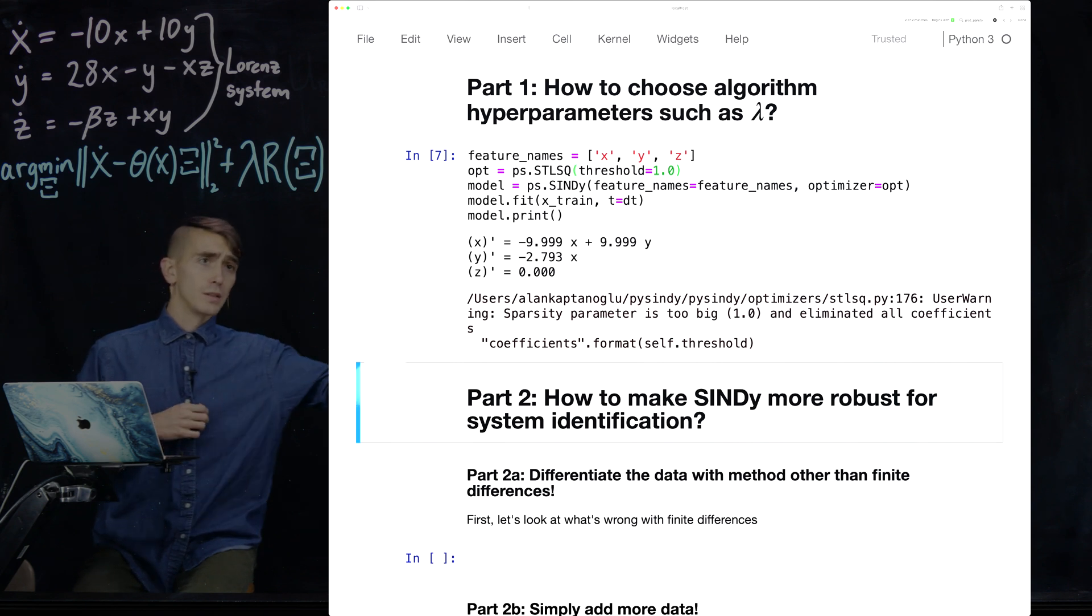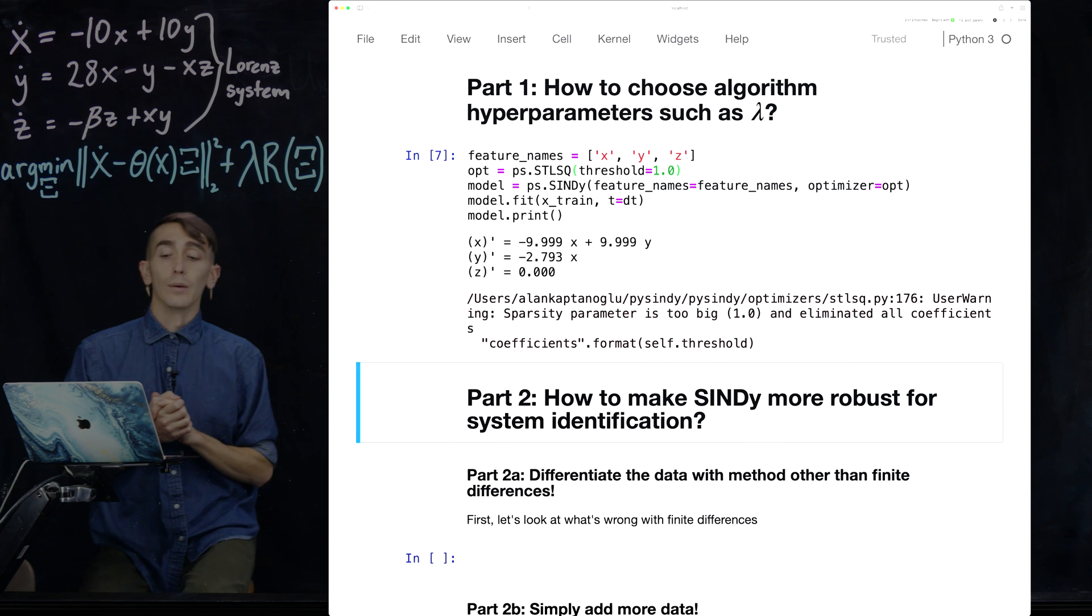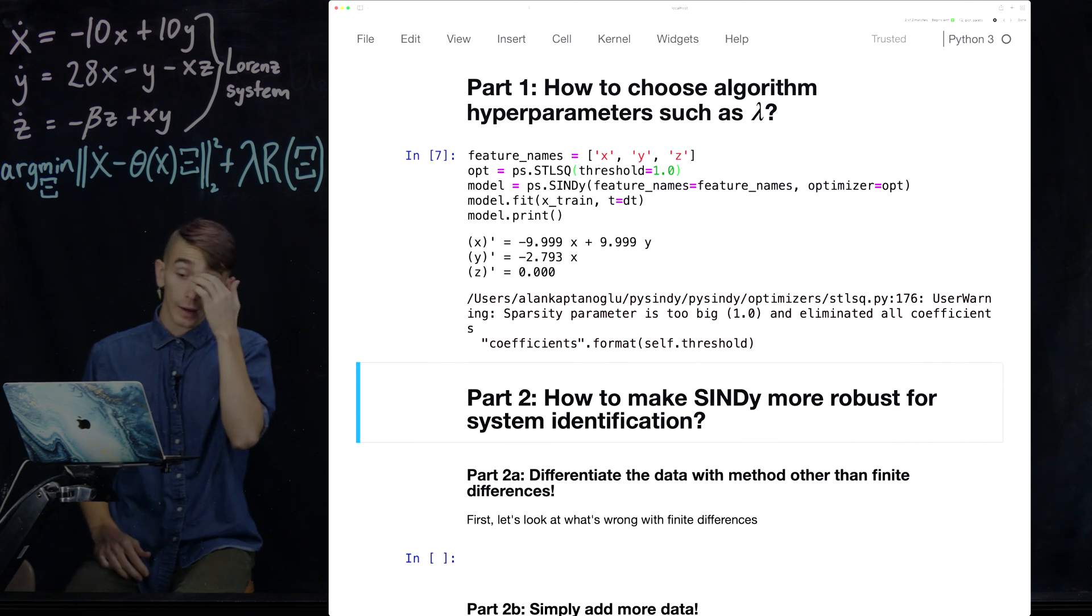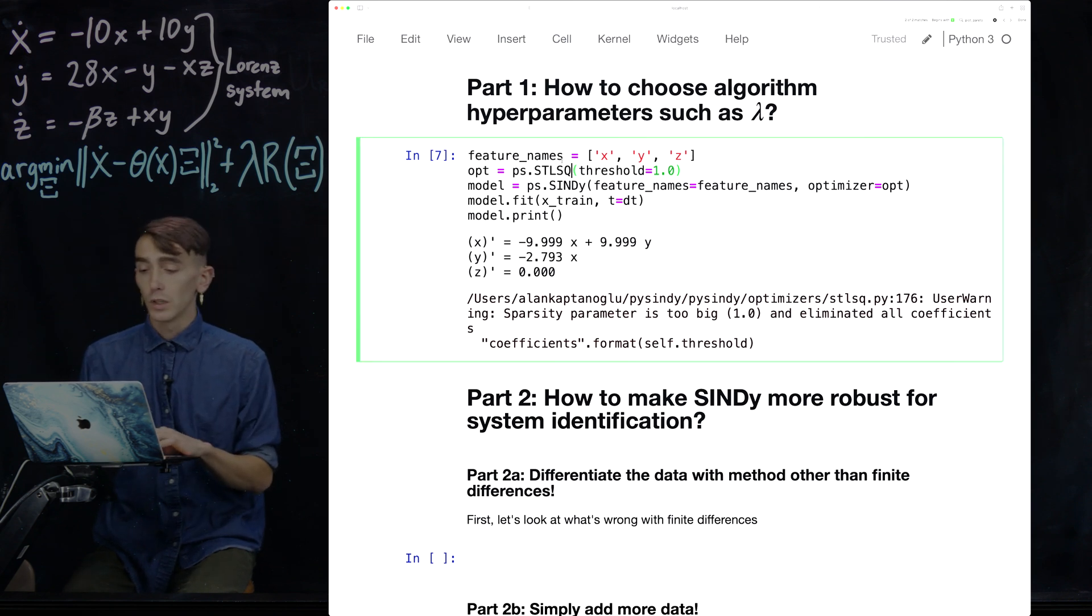So now, for instance, the equation for z dot is just equal to 0. So z is just a constant for all time, which is not the correct dynamics. So clearly there's some sort of balance between having no sparsity promotion and having too much sparsity promotion. And how do you actually tune this parameter for your specific system? There's a way of doing that that is beyond what I've shown you here, just basically trying different values of lambda and seeing what works.